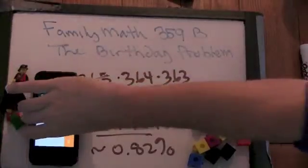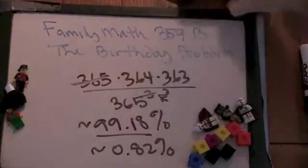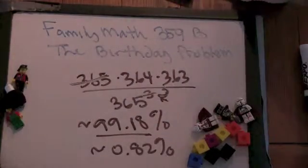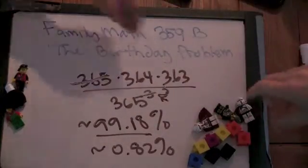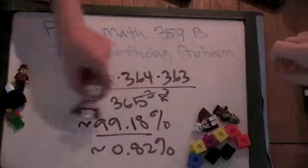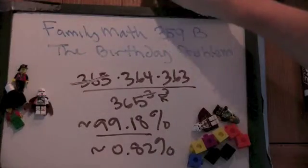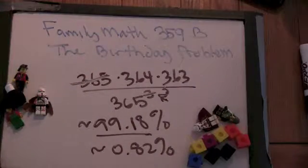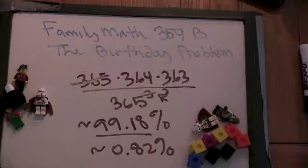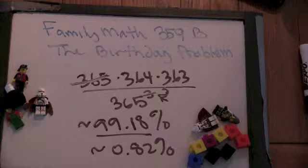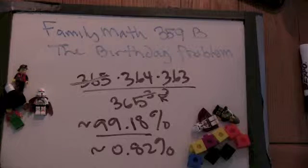All right, so for part C, let's do it with four people. So why don't you pick a fourth person. What's our approach to calculating the probability that four people — at least two of them — have the same birthday?